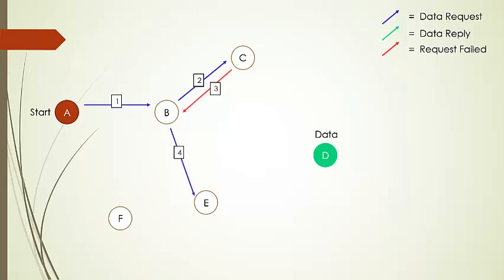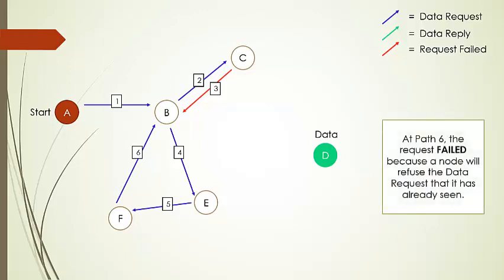B sends to E, E to F, and from F to B a cycle is formed. Here the request fails again as the node refuses the request it has already seen. So request failed is from B to F, then F to E.